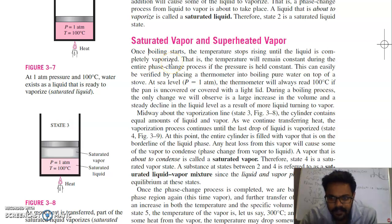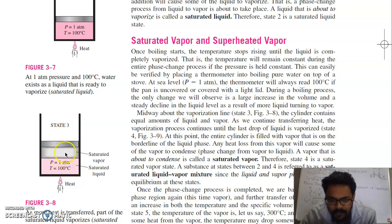During boiling, the temperature won't increase. Your liquid starts to change its phase — temperature will be constant during the entire phase change process if the pressure is held constant. The pressure has to be constant. As you can see in this diagram, boiling has started and the liquid is converting to vapour. This is called saturated vapour, but pressure is one atmosphere.